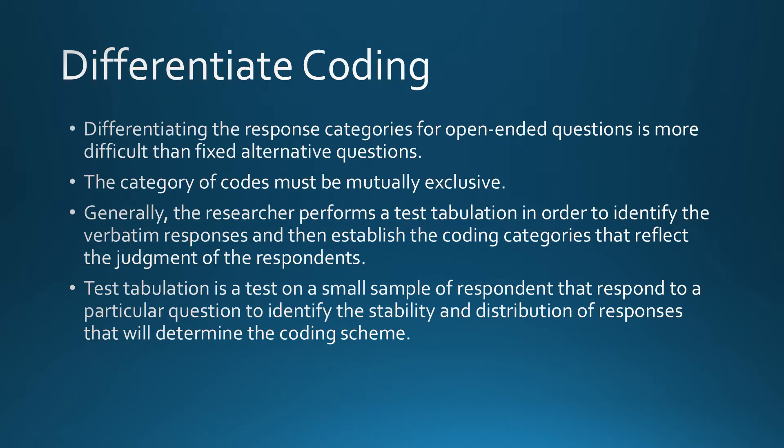Differentiate Coding. Differentiating the response categories for open-ended questions is more difficult than fixed alternative questions. The category of codes must be mutually exclusive. Generally, the researcher performs a test tabulation in order to identify the verbatim responses and then establish the coding categories that reflect the judgment of the respondents. Test tabulation is a test on a small sample of respondents that respond to a particular question to identify the stability and distribution of responses that will determine the coding scheme.